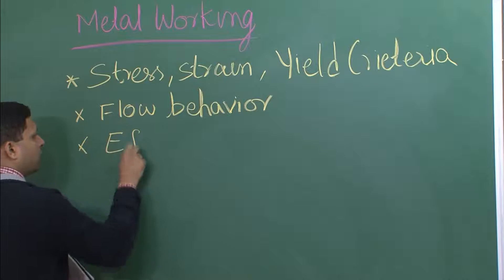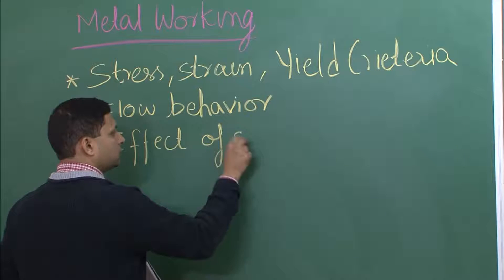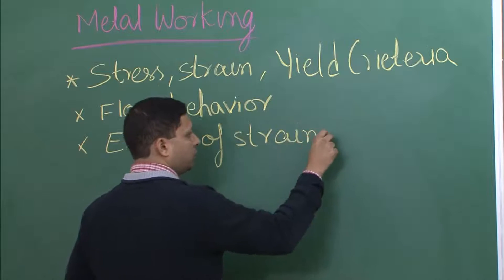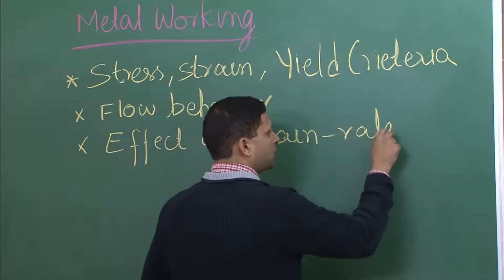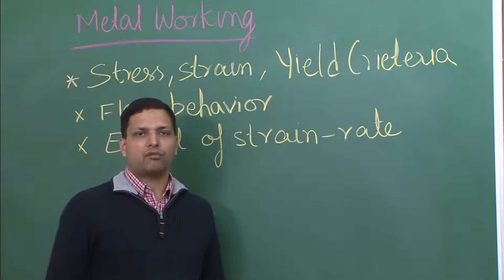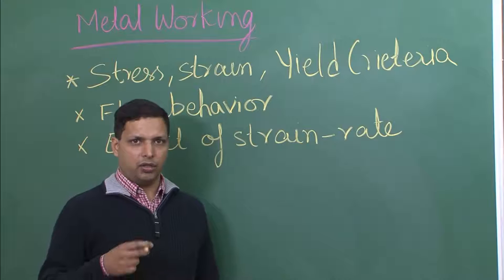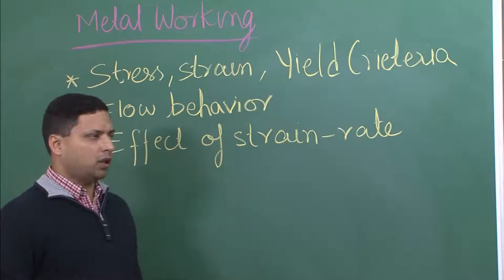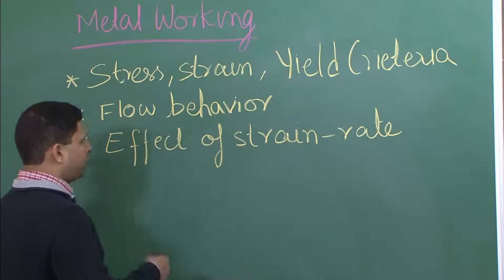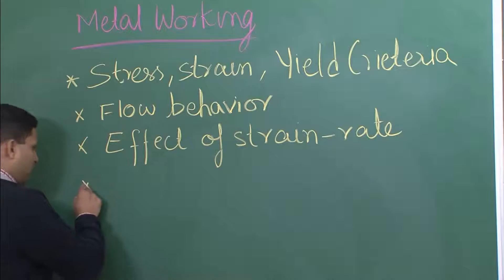Then we will move on to understand flow behavior, again related to stress, strain, and yield criteria. Then we will take a look at the effect of strain rate. There are three very important parameters in metalworking: strain, strain rate, and deformation. These are the input parameters that you impose during the deformation processes, so the individual and combined effects are all important to understand.